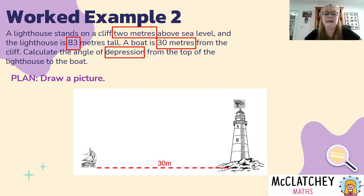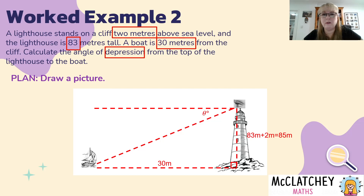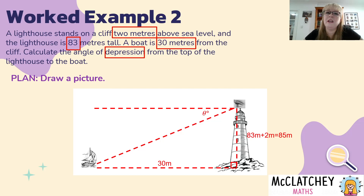Let's draw a picture — it can just be a very simple triangle for the boat and a rectangle for the lighthouse. The boat is 30 meters away, and the lighthouse is 83 meters tall plus the two-meter cliff, so the whole height is 85 meters. I've got an angle of depression from the top of the lighthouse to the boat. Remember I have this horizontal line — it's very tempting to draw that angle inside the triangle you've formed, but you cannot, because it is formed with the horizontal at the top; that's an angle on the outside. Using parallel lines, you can place the alternate angle inside your triangle to solve.